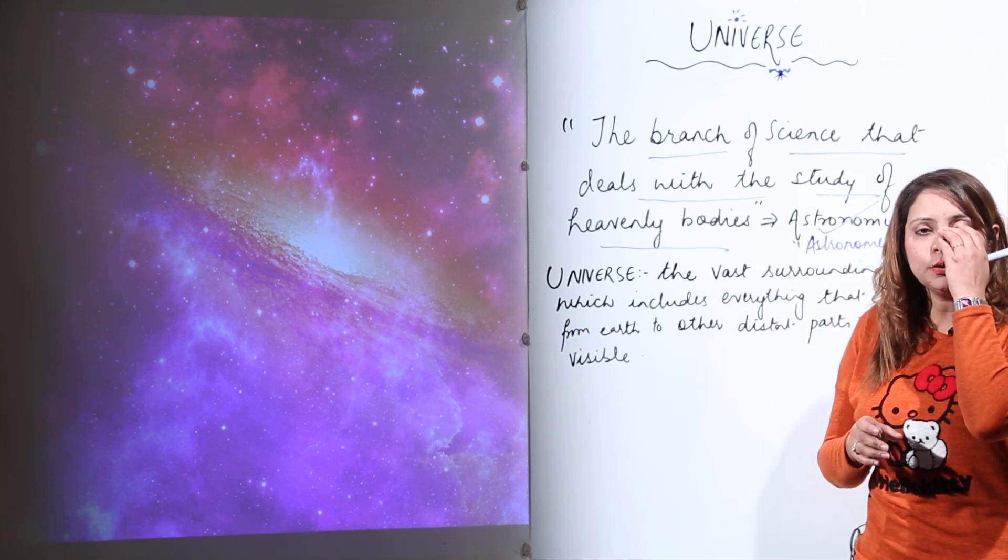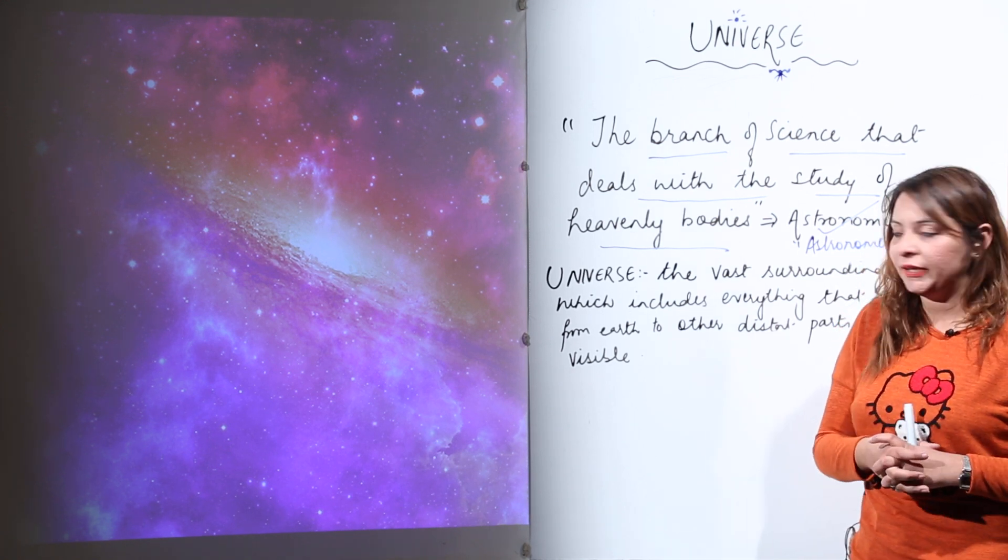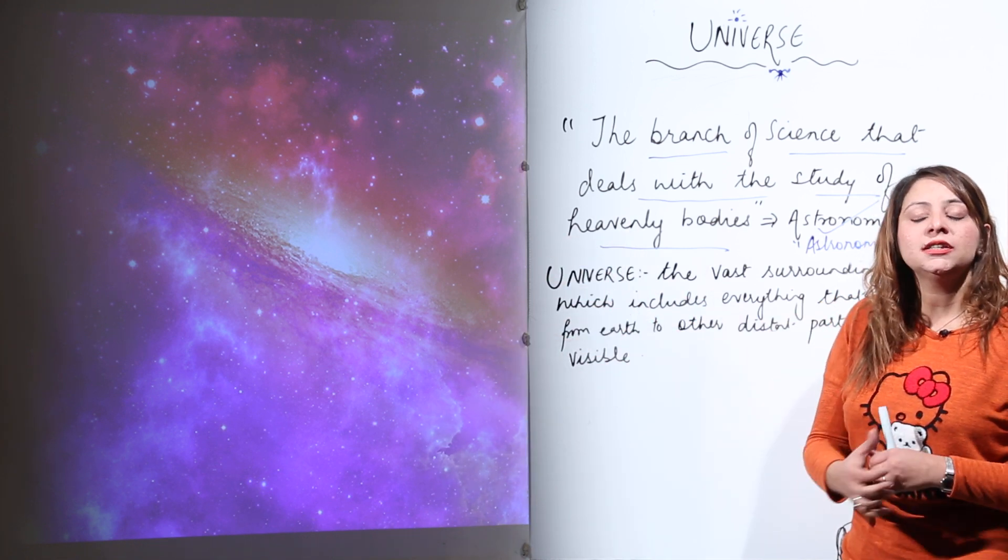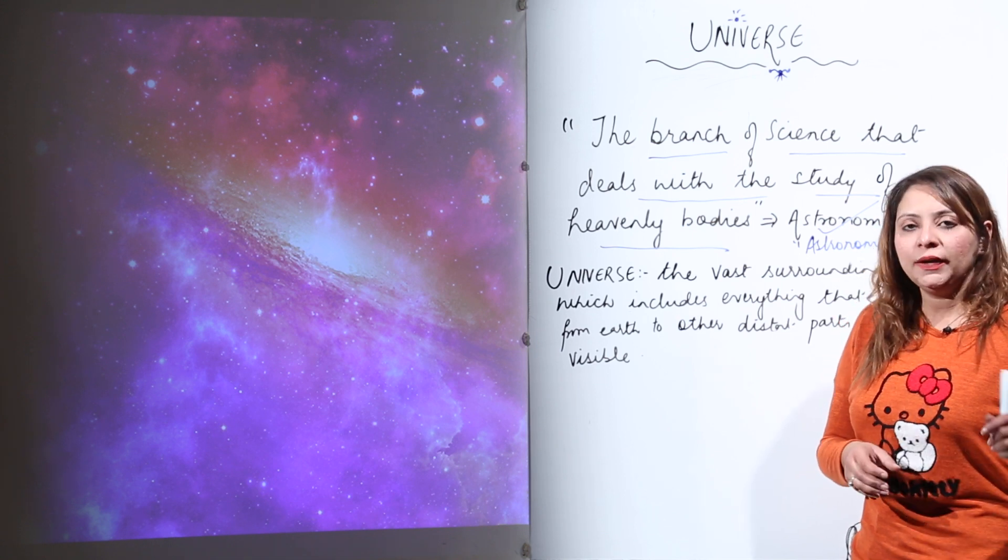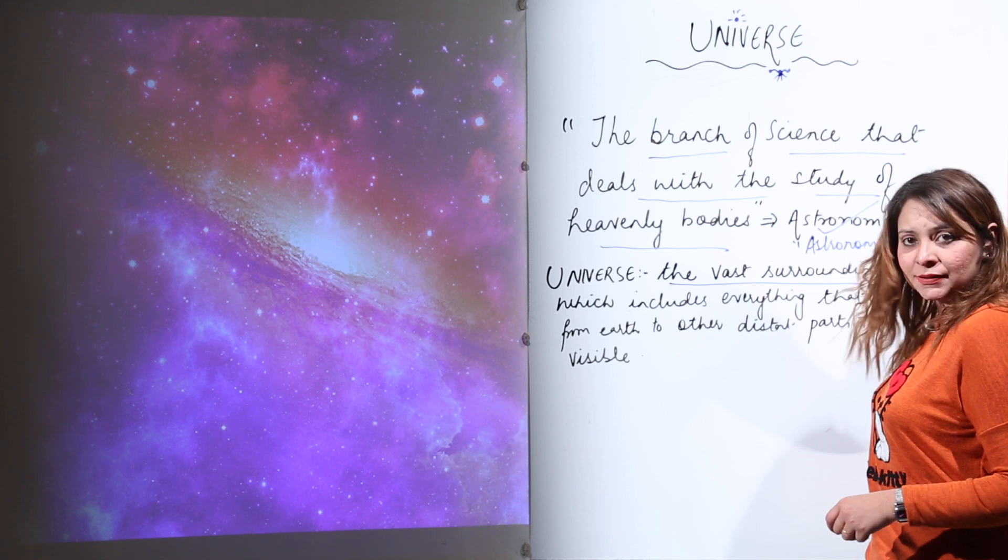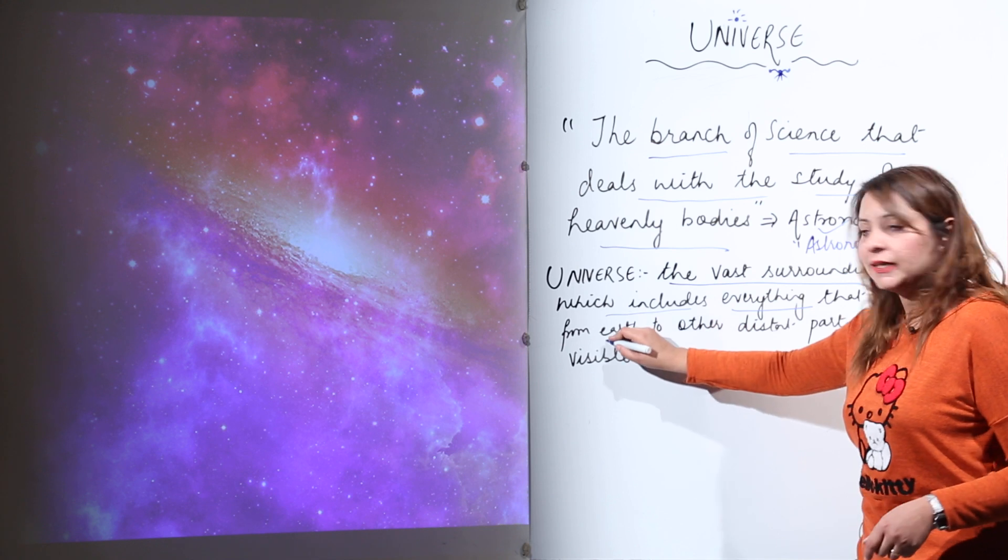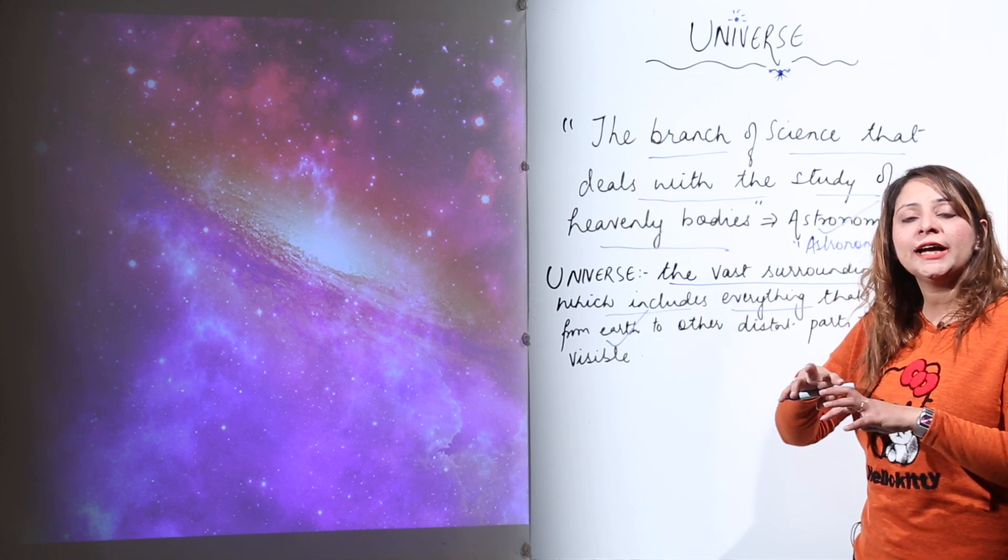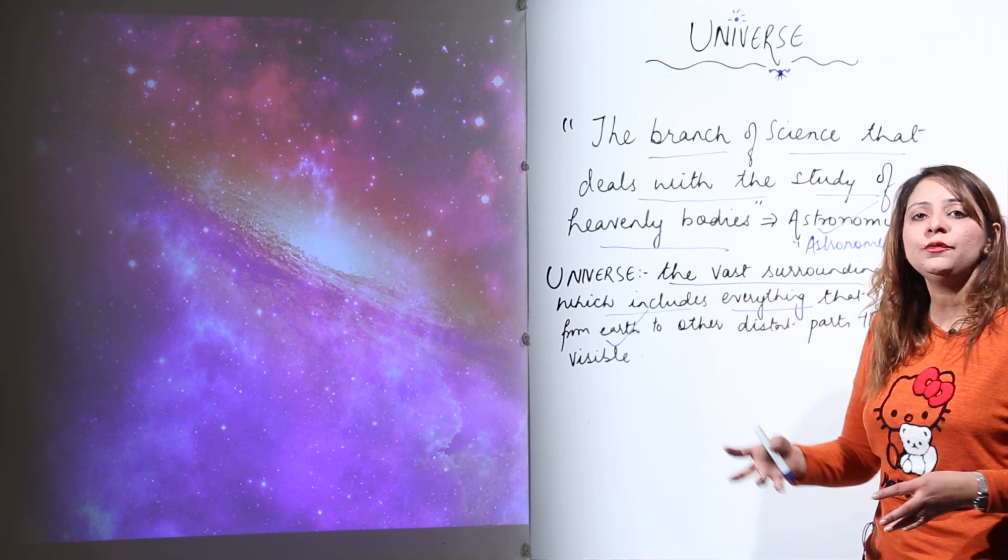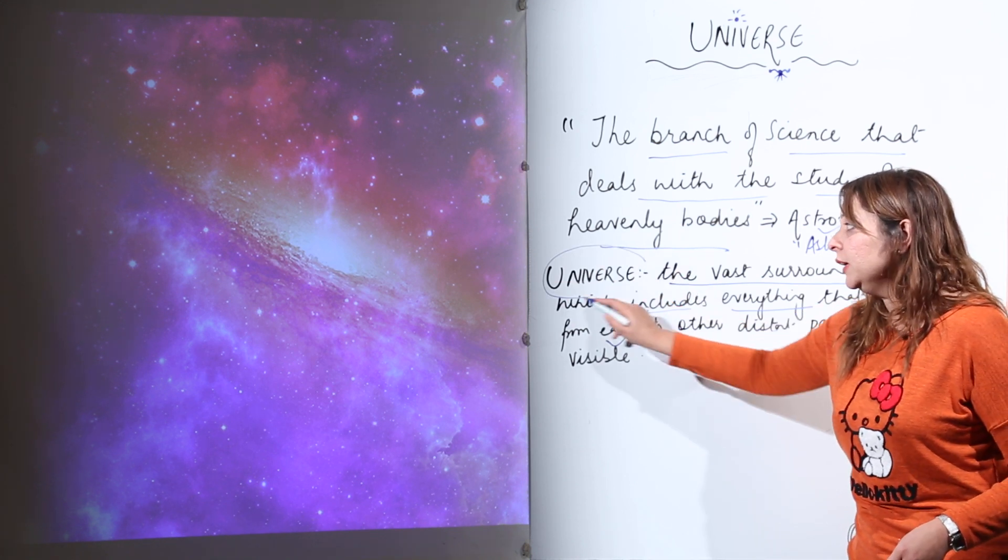We can conclude now what universe actually means. As you can clearly see in the picture, the universe looks like this. It consists of many heavenly bodies that exist. Universe is the vast surrounding space which includes everything - the earth and the things which are visible to us. They are far, but still we can see them. All these things constitute the universe.